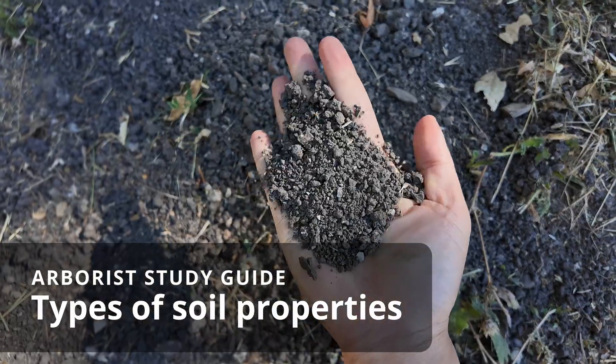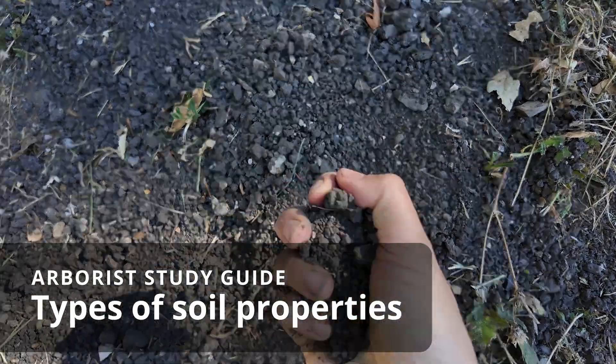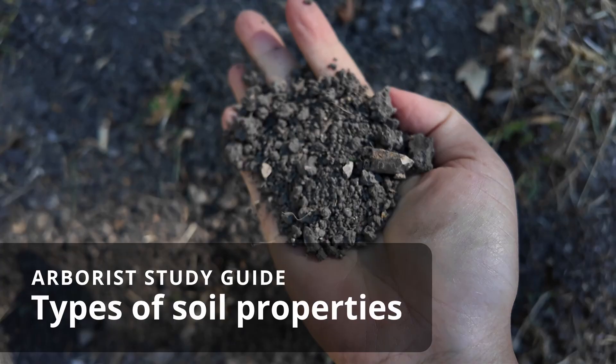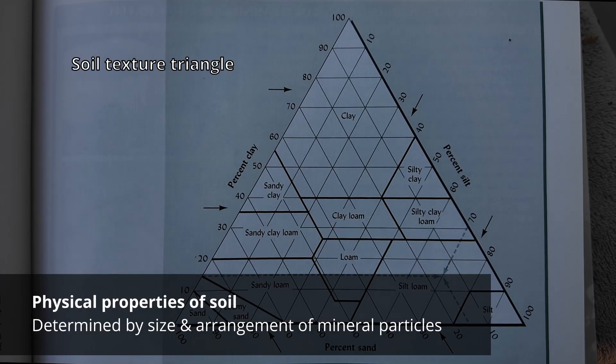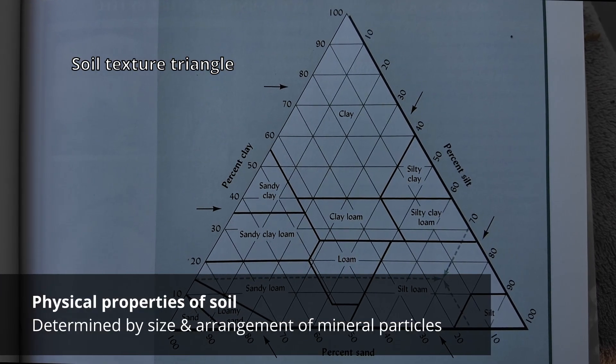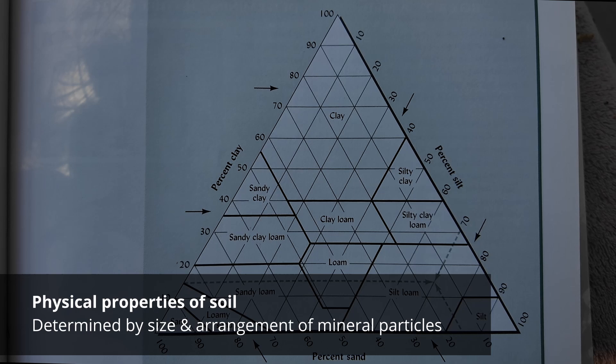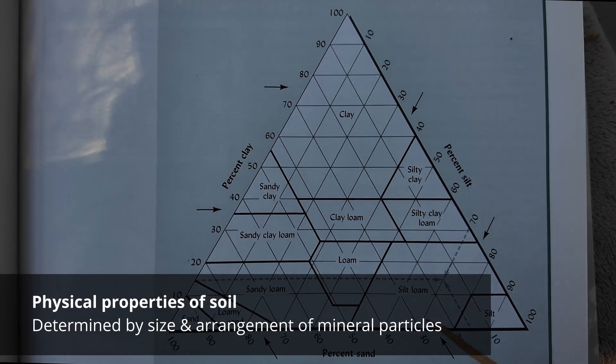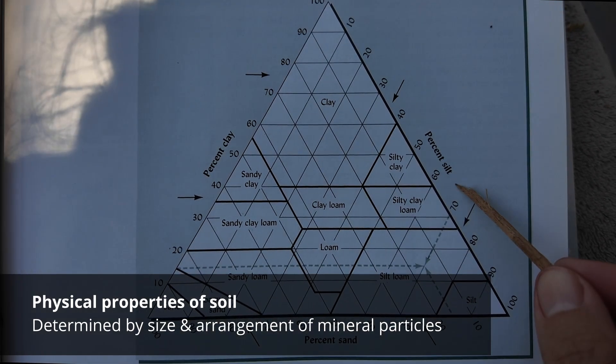This video is going to explain the differences between physical, chemical, and biological properties of soil. The study guide defines a physical property as one that is determined by the size and arrangement of mineral particles and other content.